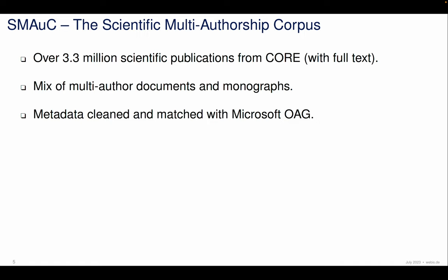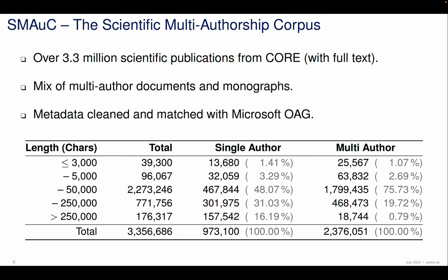What does SMAUG contain? SMAUG contains more than 3.3 million scientific publications from the CORE dataset, for which we could get the open-access full text. These texts are a mix of multi-author documents and monographs — texts written by only one single author. Since the CORE dataset doesn't have the cleanest metadata, we matched all the metadata with the Microsoft Academic Graph to clean it up. We ended up with 3.3 million documents in total, of which around one million are monographs, whereas the rest are multi-author documents.